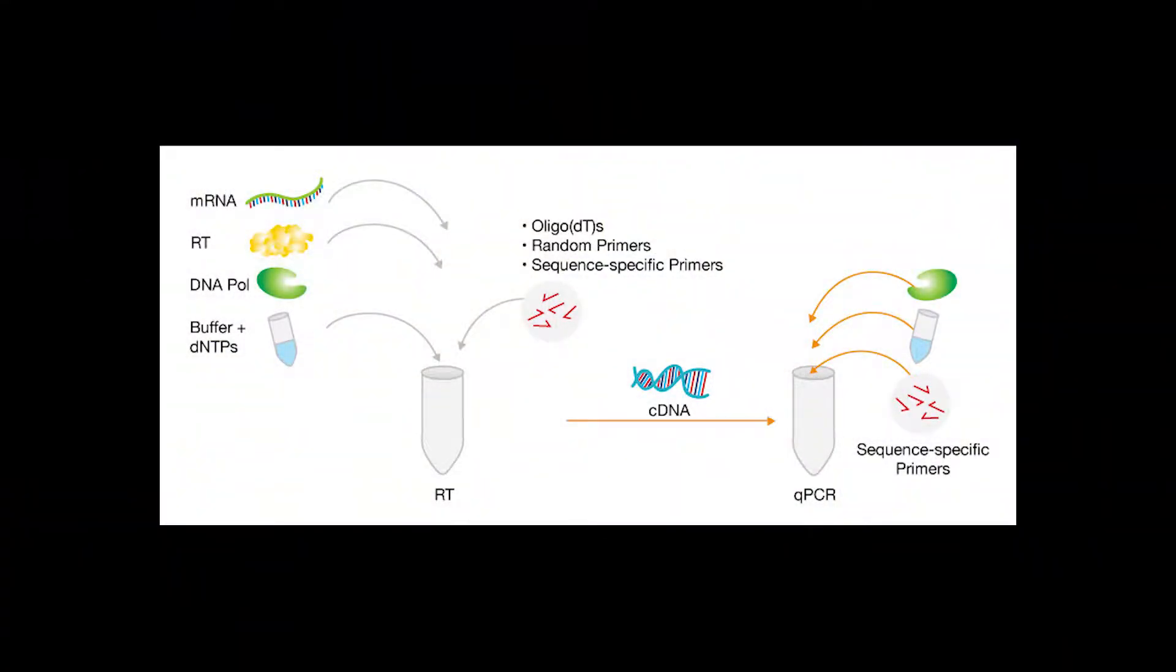MIQE guidelines stipulate that accurate template quantification and contaminant information are essential when publishing qPCR results. An RT-qPCR assay includes two enzymatic steps. In the first step, RNA is converted to cDNA using reverse transcriptase. Normalizing the amount of RNA going into the reaction helps minimize variability in cDNA production, which can be crucial since RT reaction efficiencies can change with different RNA concentrations.